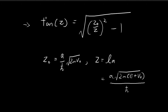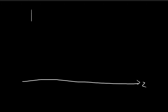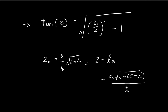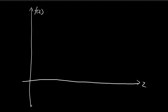So we will have to graph this and see where the intersections occur to find the values of Z for which this equation is satisfied. Let's try to graph this and see what happens. Let's say this is your Z-axis, and this is F of Z. First let's try to graph tangent Z.